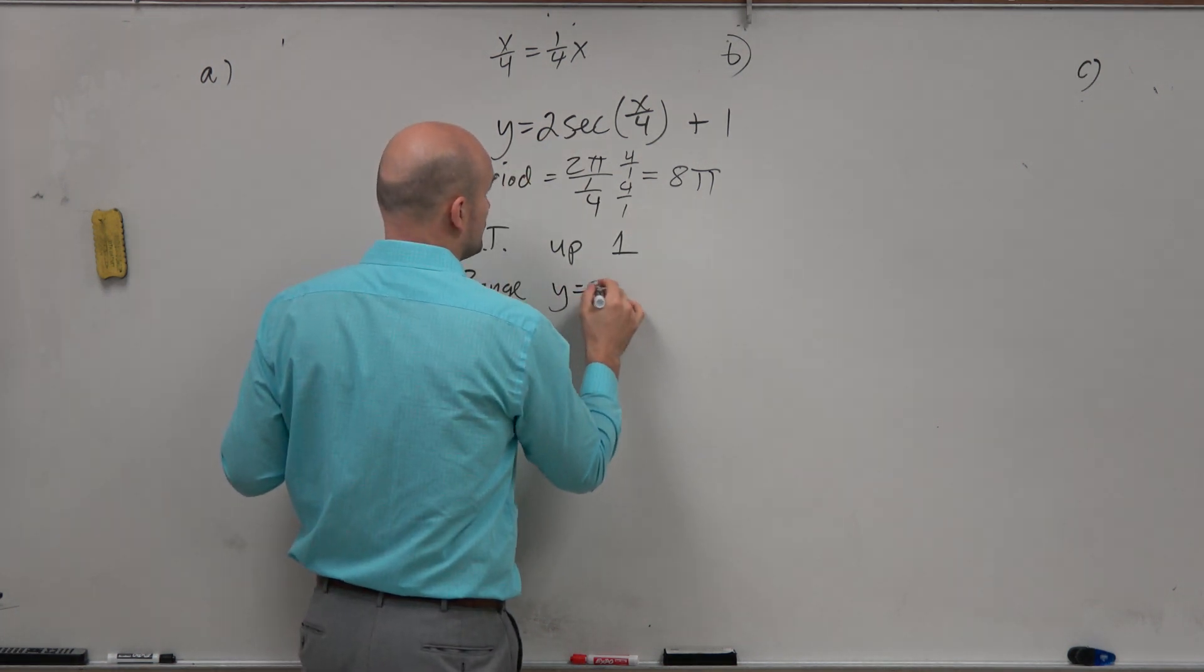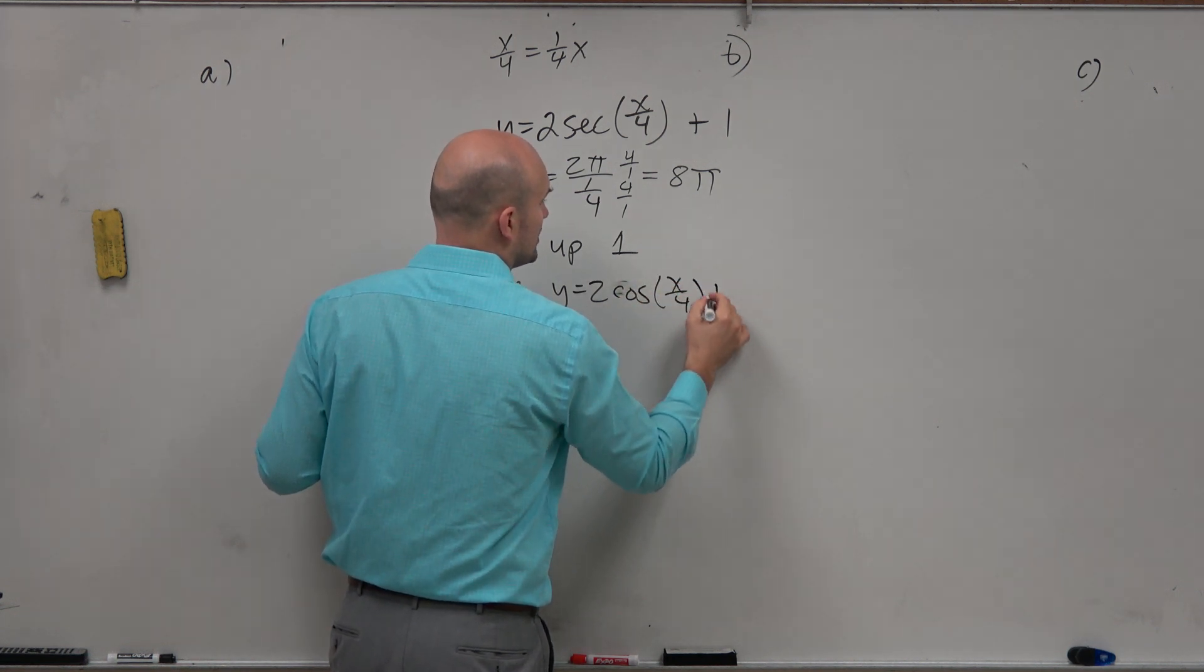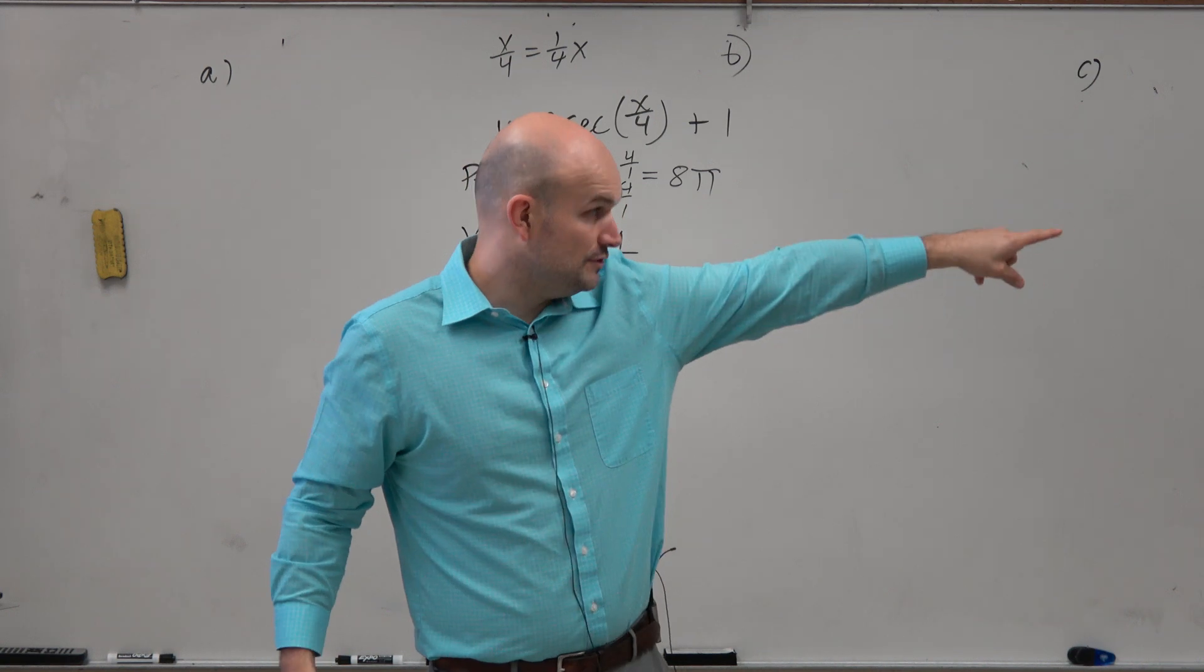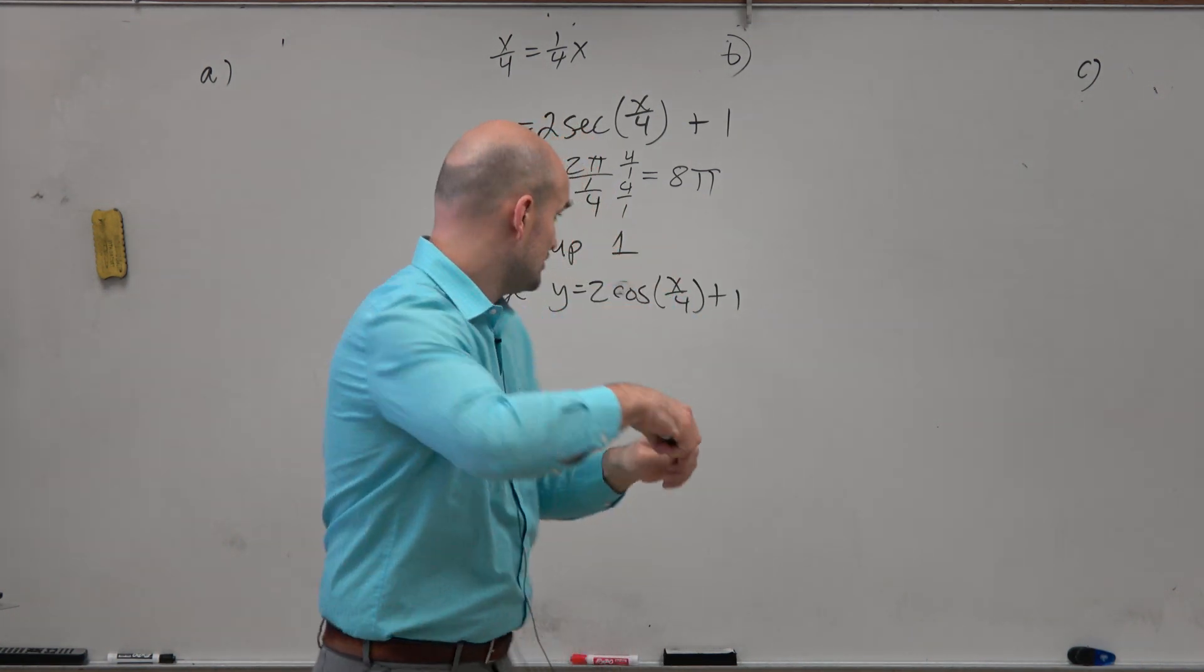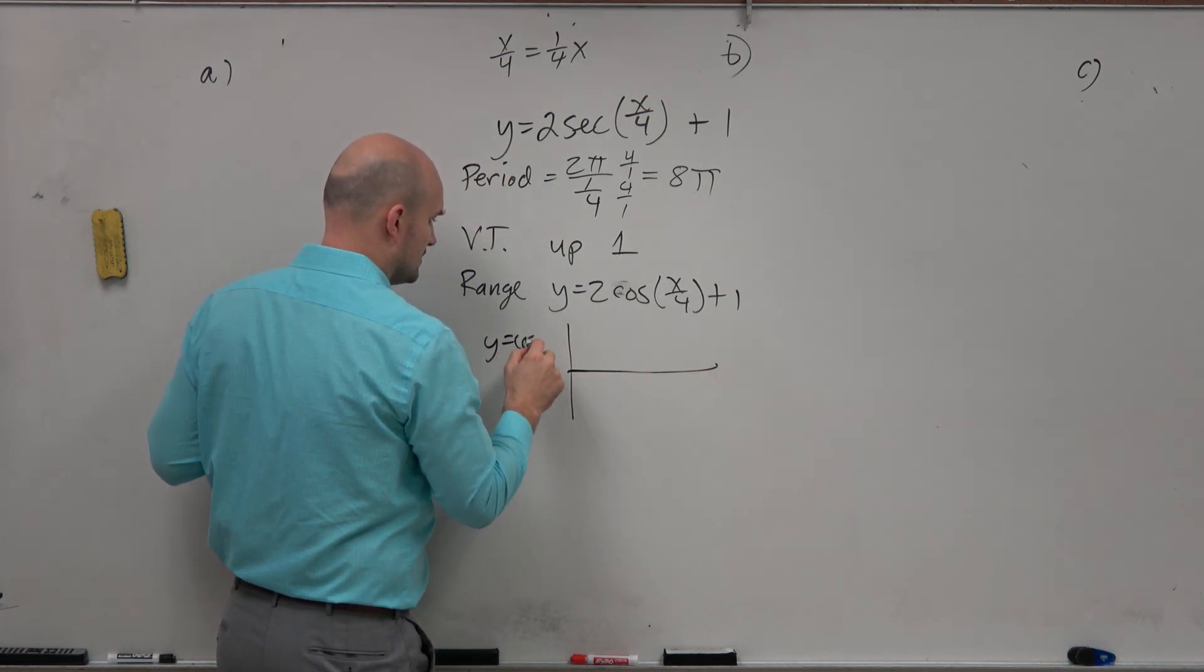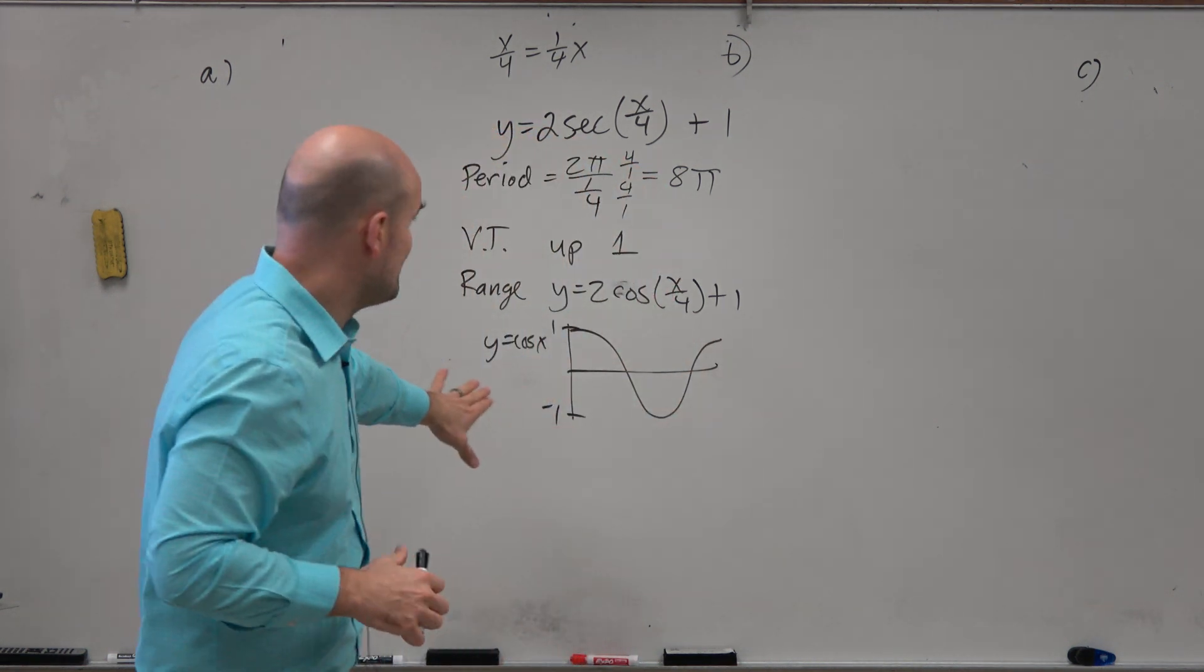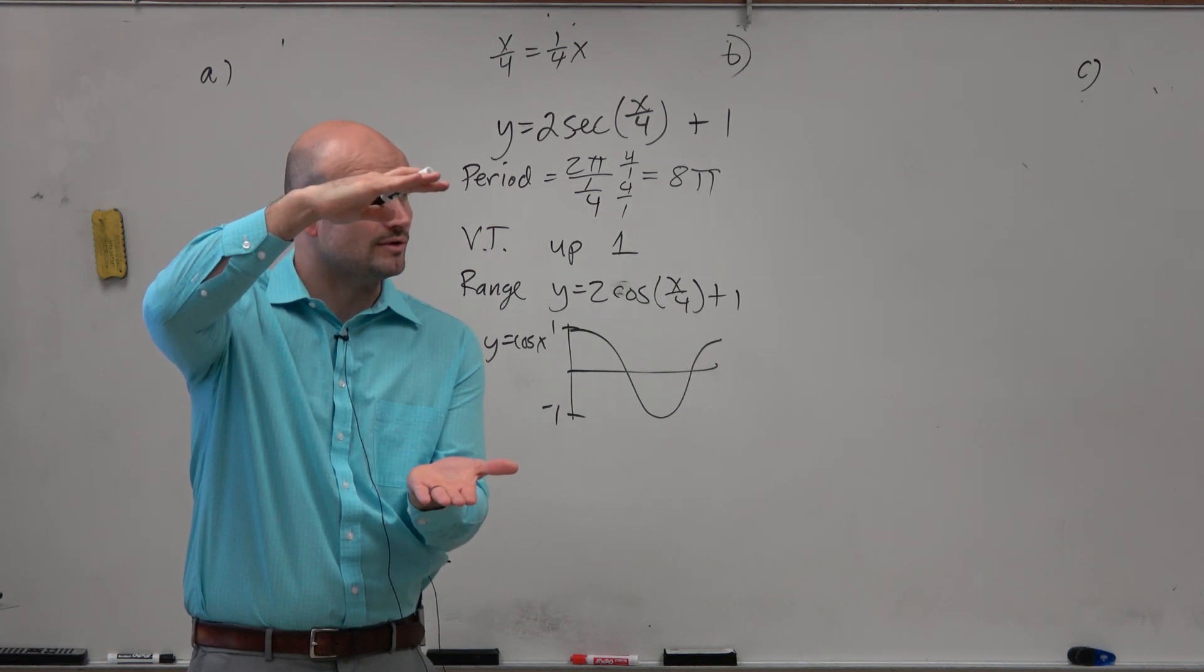So y equals 2 cosine of x over 4 plus 1. So let's just think about what cosine represents. Let's think about the range of cosine. So if you look at that, although it's our parent graph, we know that cosine has a range, or at least the parent graph of cosine. Let's just do cosine of x.